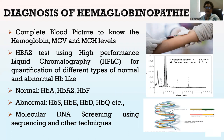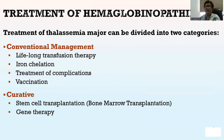Diagnosis of hemoglobinopathies involves a complete blood picture to assess hemoglobin, MCV, and MCH levels; HbA2 testing using high-performance liquid chromatography (HPLC) for quantification of different types of normal and abnormal hemoglobin — such as HbA, HbA2, HbF, HbS, HbE, HbD, HbA3 — and molecular and DNA screening using sequencing and other techniques. Treatment of thalassemia major is divided into two categories: conventional management, including lifelong transfusion therapy, iron chelation, treatment of complications, and vaccination; and curative options, including stem cell transplantation, bone marrow transplantation, or gene therapy.